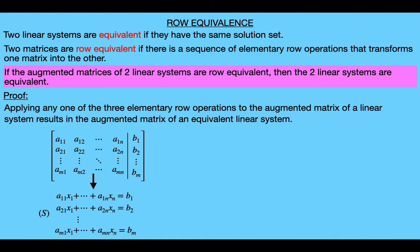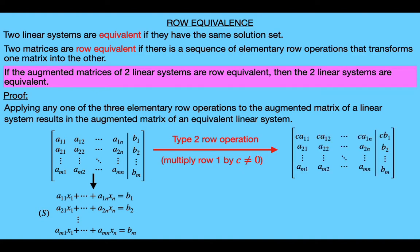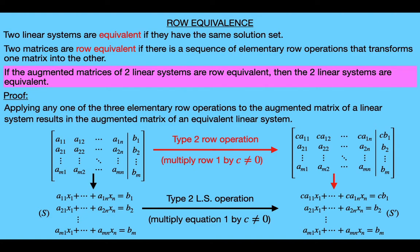Next we'll prove it for the second row operation. We apply the second row operation by multiplying the first row of this matrix by some nonzero constant C, giving us a new matrix representing a new linear system S prime. We can obtain S prime by multiplying every term of the first equation of S by the constant C, which is one of the three operations for linear systems that preserves the solution set. So this proves that S and S prime must be equivalent.